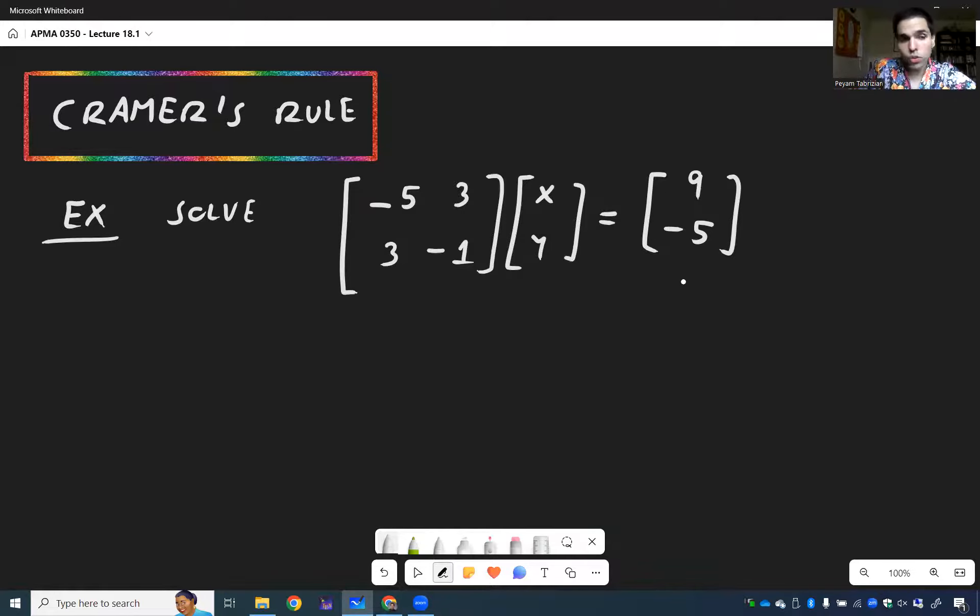And in order to do this, we just need the concept of the determinant. So for a two by two matrix, the determinant of [[a,b],[c,d]] is ad - bc. So you multiply the cross terms and then subtract it.